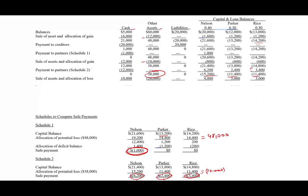We make a third sale — sold something for $10,000 with a basis of $20,000, so we are at a loss. We receive cash of $10,000 but have a loss to distribute. The $10,000 loss is distributed at 40%, 30%, and 30% to the three partners.